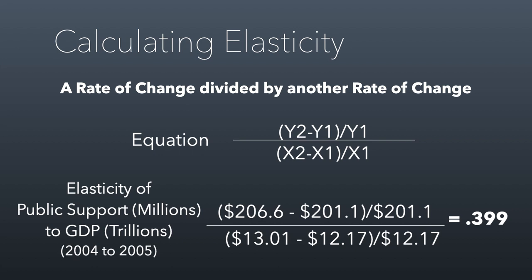The elasticity measure is going to change from one year to the next, so you would do this calculation across multiple years to get a better sense of the true elasticity. Basically, what this tells us is that as the economy grows, public support in March of Dimes grows by about 39.9% of that. What this all means is that March of Dimes does not grow as fast as the economy, which might explain why they're not beating inflation. What we're actually describing is an organization that, relative to the economy, is smaller and smaller every year — not going negative, but because it's not growing as fast as the economy, on a relative basis it's shrinking.